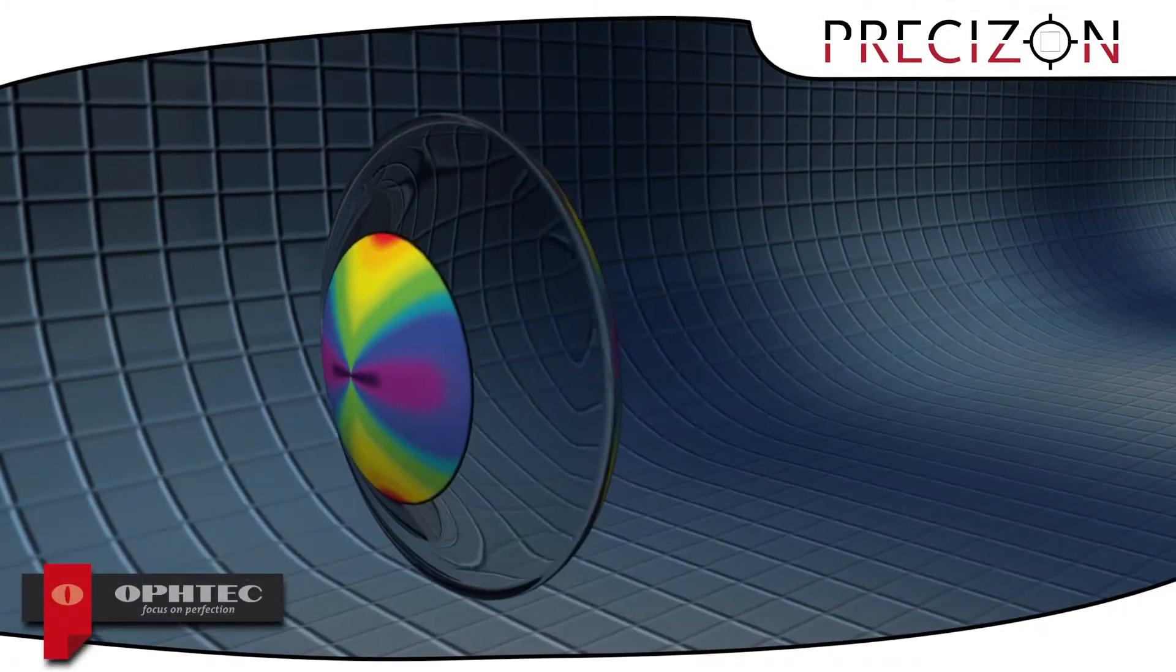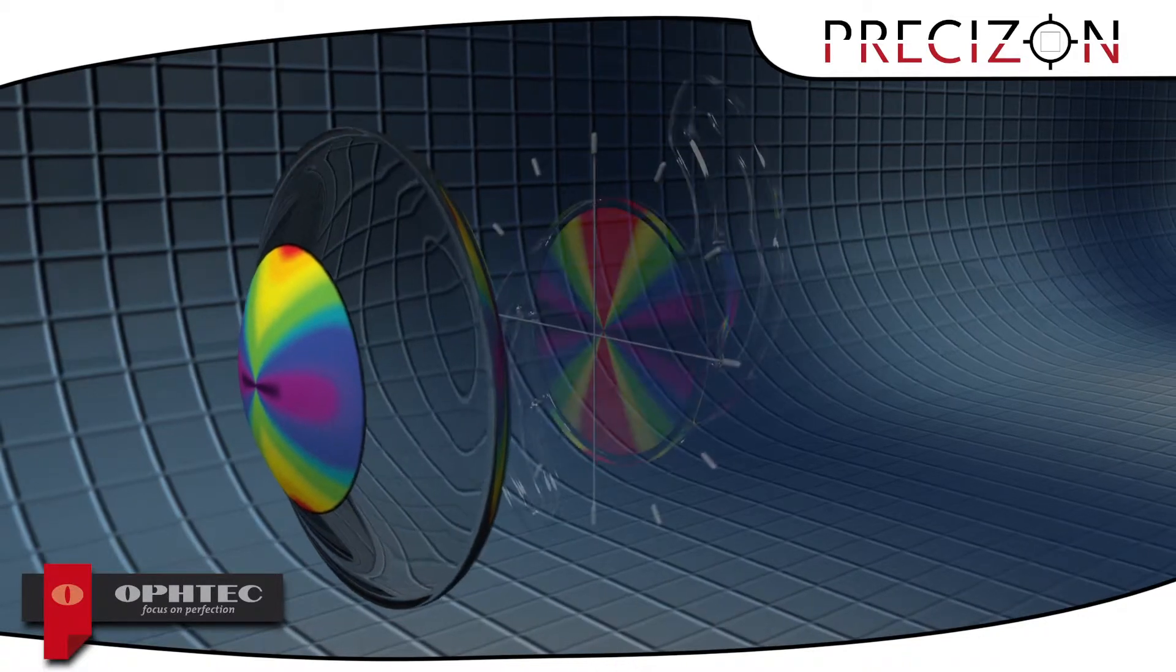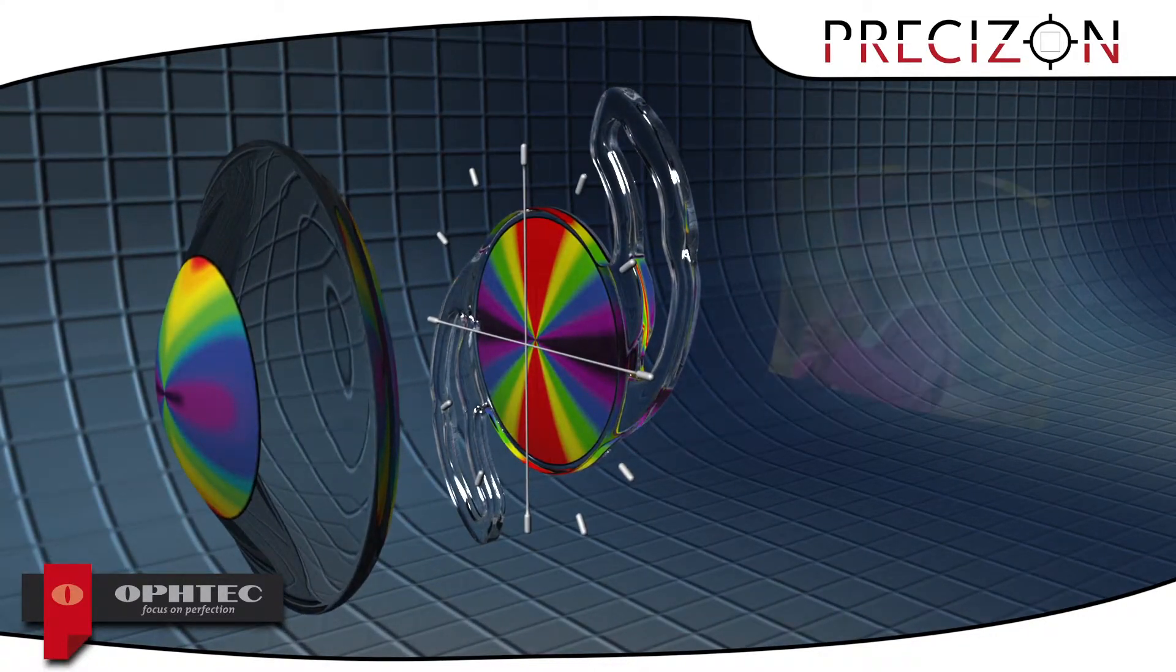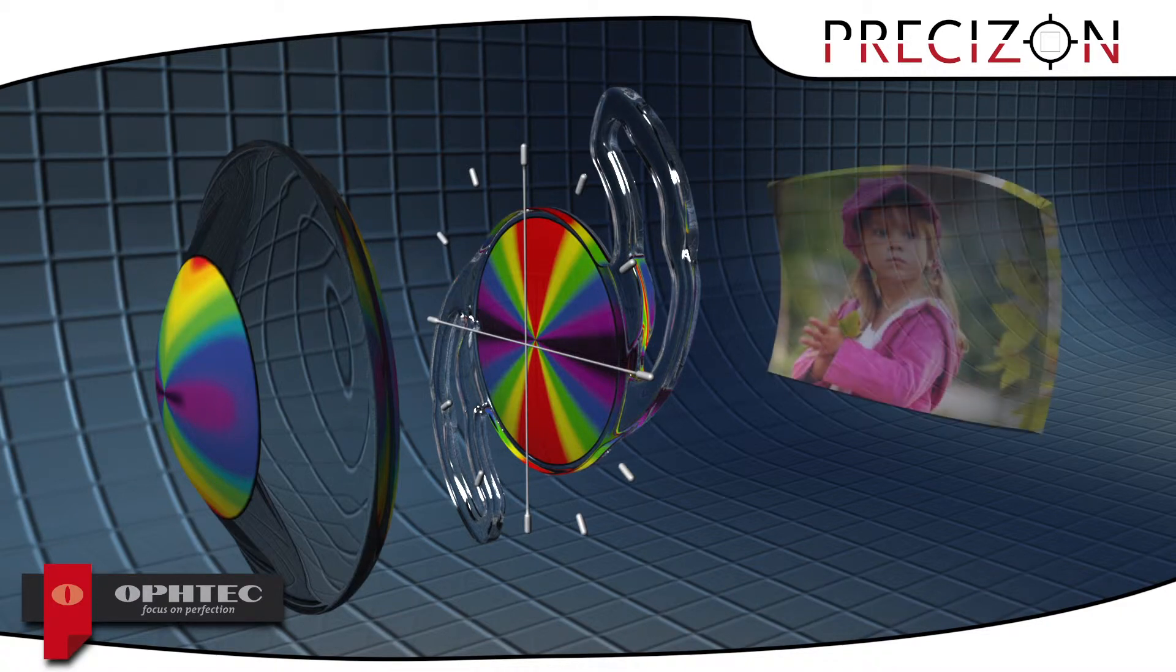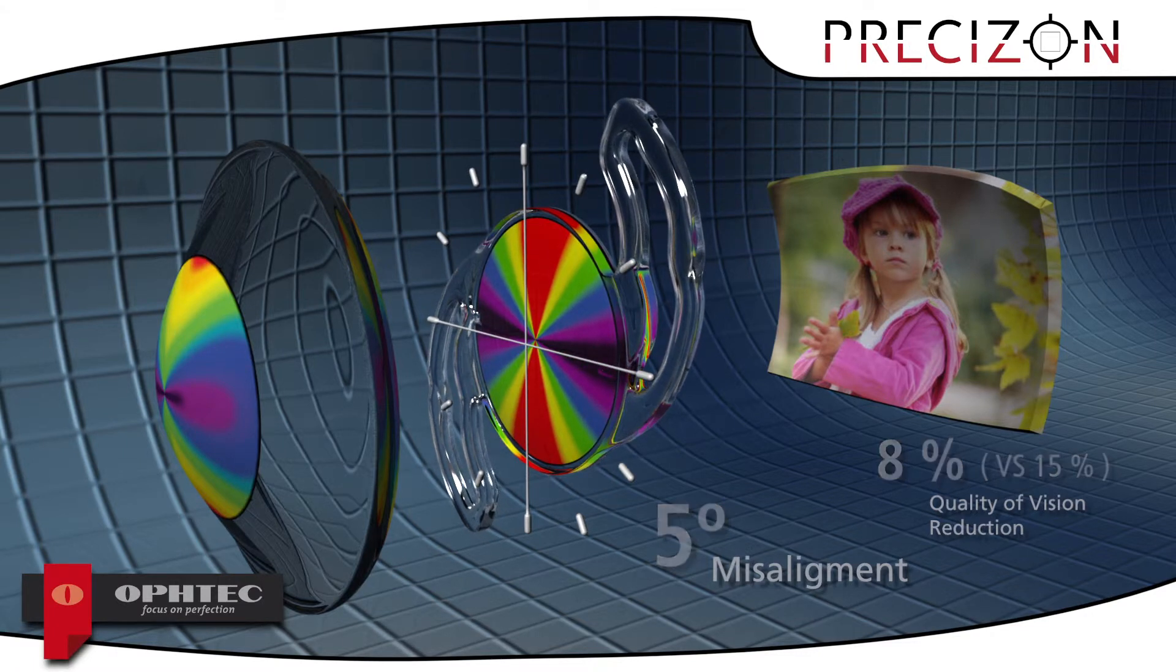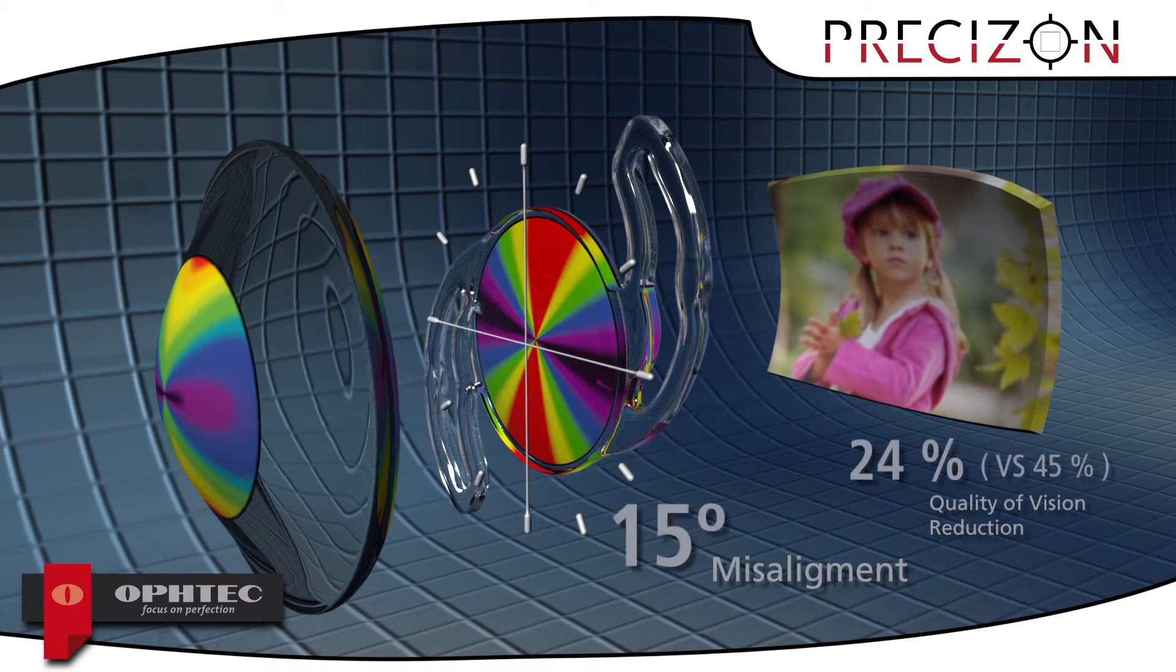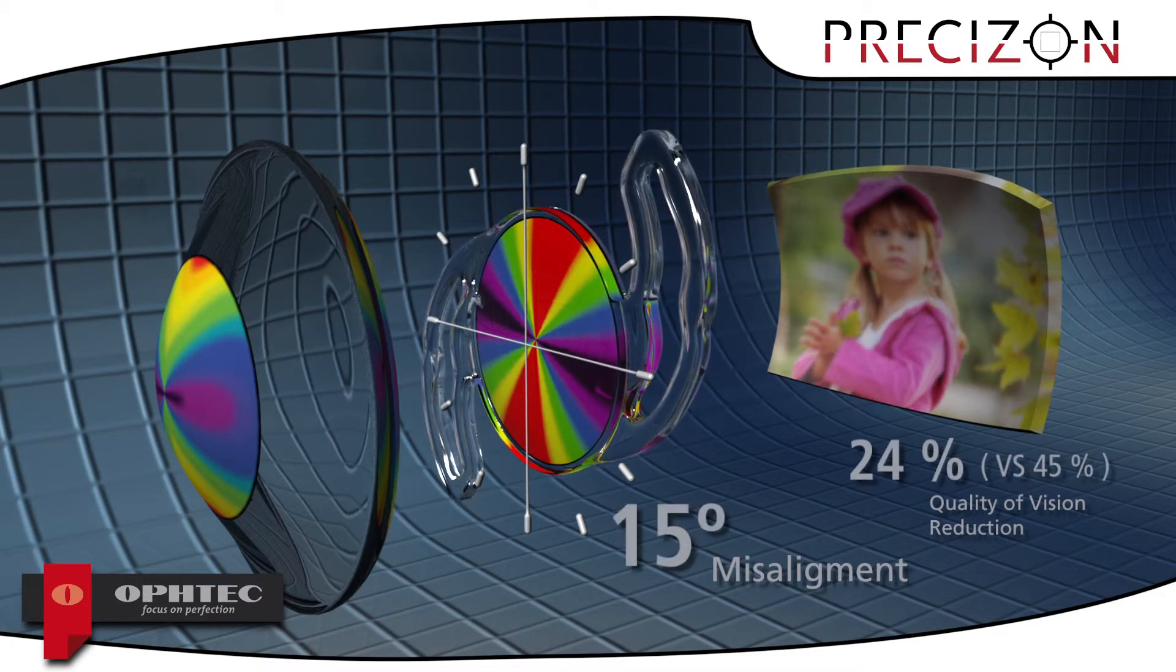What effect does the Precizon Toric radius have on the quality of image seen by your patients? Perfectly aligned axis. If misaligned by 5 degrees. If misaligned by 10 degrees. If misaligned by 15 degrees.